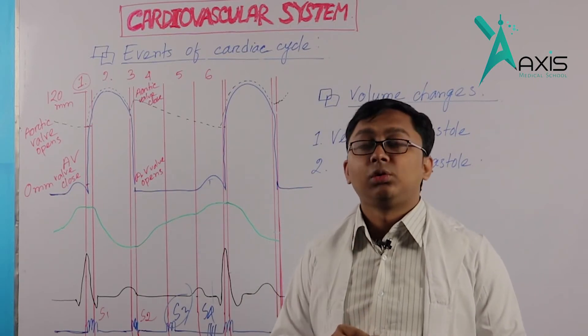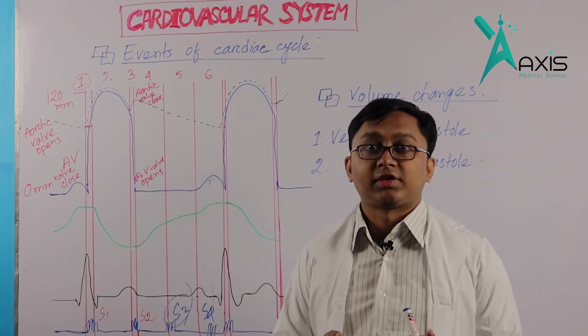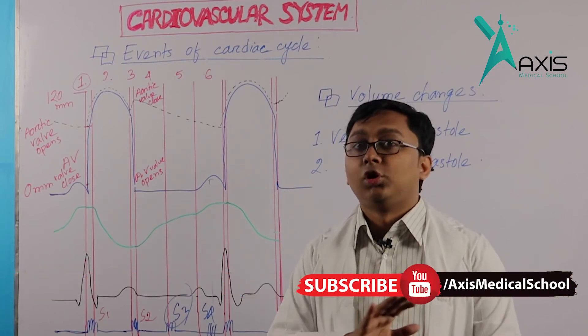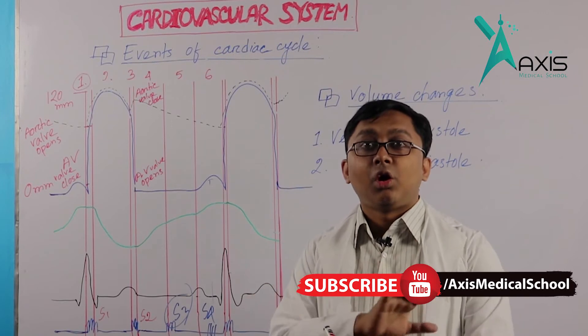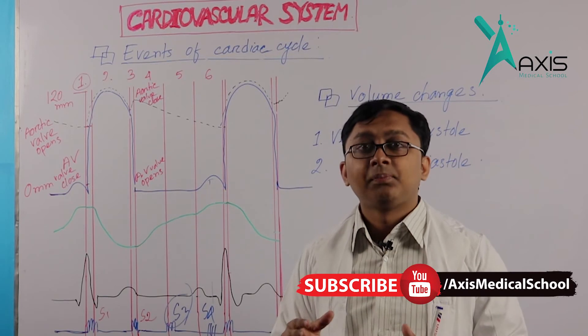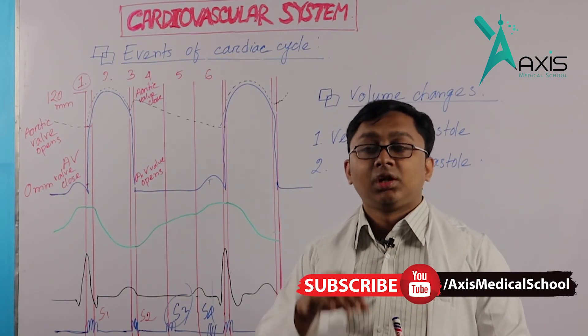The second phase of diastole is isovolumetric relaxation. Again, isovolumetric means volume is not changed because all four valves are closed. The ventricle is relaxing as a closed cavity.